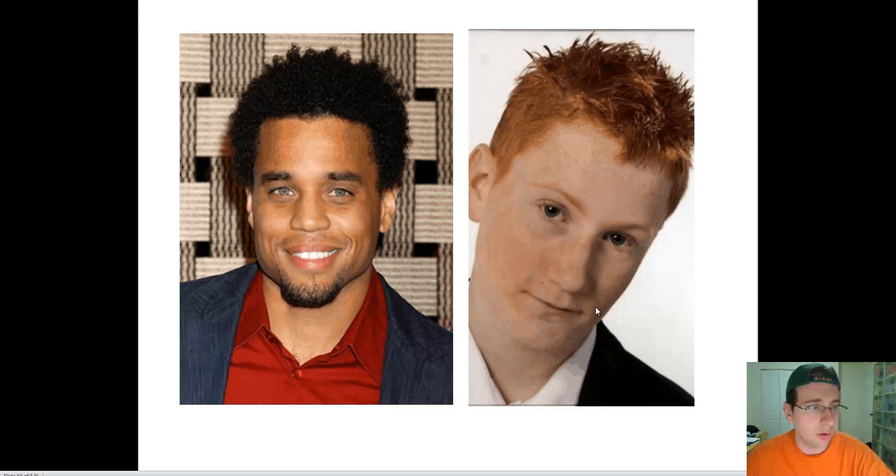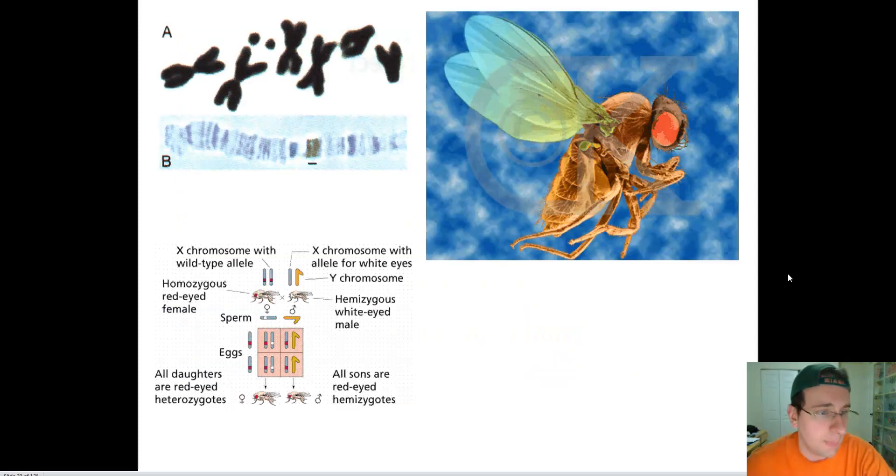So Thomas Morgan worked with fruit flies, and you see an example here of a fruit fly. In class we actually look at fruit flies in the microscope, so you can see what one looks like. You see the actual karyotype that he was looking at. Fruit flies have very few chromosomes, and so it's very easy for a scientist to track the DNA of these fruit flies across generations.